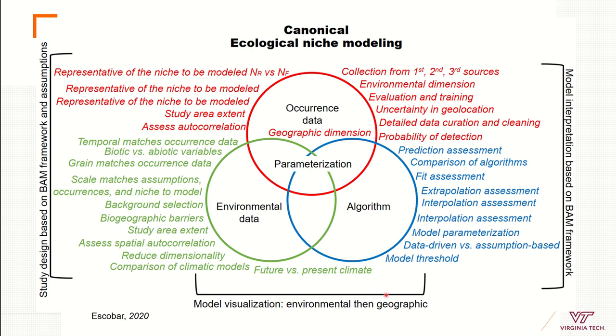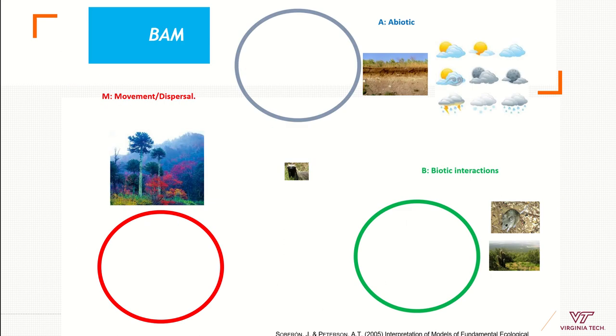Now for the study design, something that you are going to see a lot in ecological niche modeling is the Venn diagram presented by Soberon and Peterson in 2005 in the journal Biodiversity Informatics. We have three components: the biotic here in green, the abiotic variables here, and the movement or dispersal capacity.